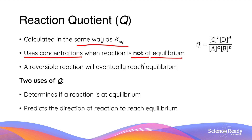There are two uses of reaction quotient. We can use it to determine if a reaction is at equilibrium or not. If a reaction is not at equilibrium, we can also use the reaction quotient to predict the direction the reaction will take in order to achieve equilibrium.